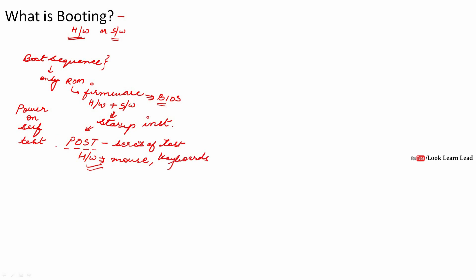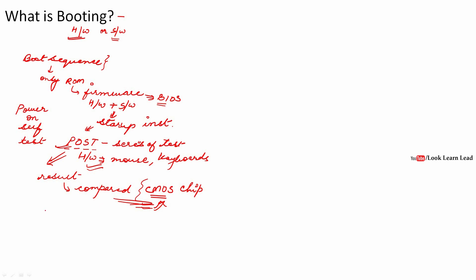After checking, POST returns some results. The result of POST is then compared to the CMOS chip. The CMOS chip is a chip that uses battery power to retain data when the computer is off — that's why your computer's clock shows the correct time after being switched off. The CMOS chip stores information about memory, the type of disk drive, current date, and other startup information.